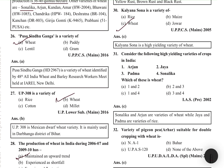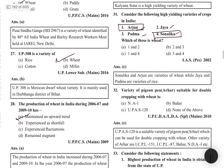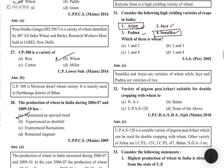MCQ: Consider the following high-yielding varieties — Arjun, Jaya, Padma, Sunalika. Which are wheat varieties? Arjun and Sunalika are wheat varieties. Jaya and Padma are rice varieties. Memory trick: Hema, Jaya, Rekha — Jaya and Padma sound like Bollywood names and are rice varieties, while Arjun and Sunalika are wheat.